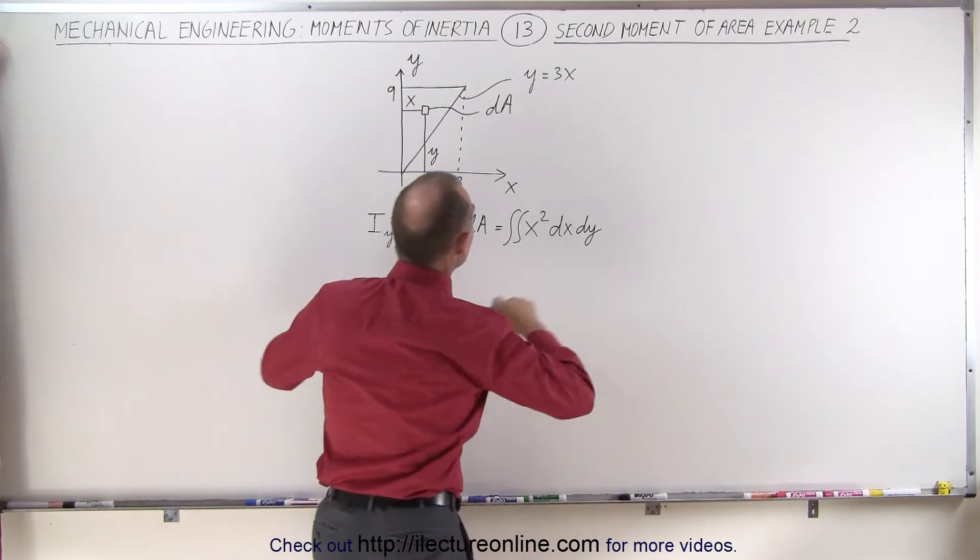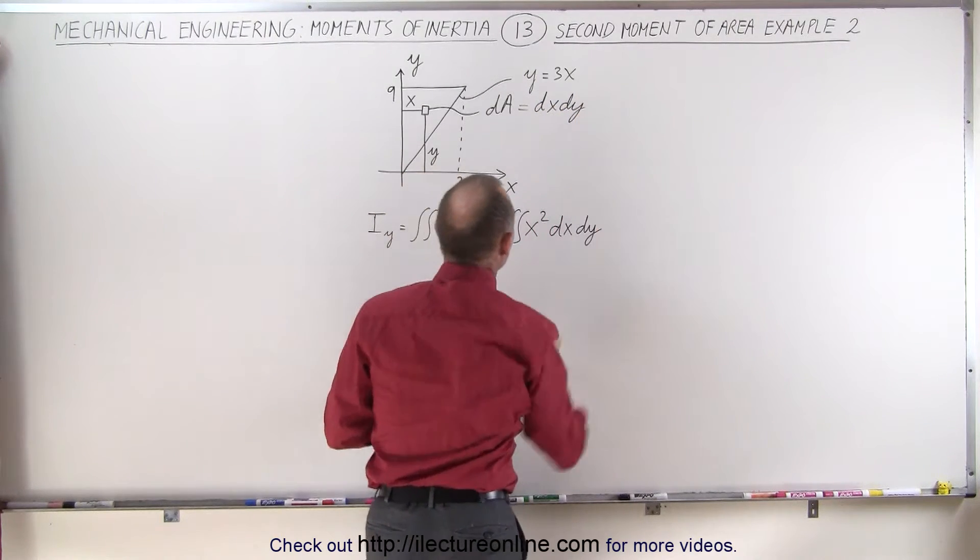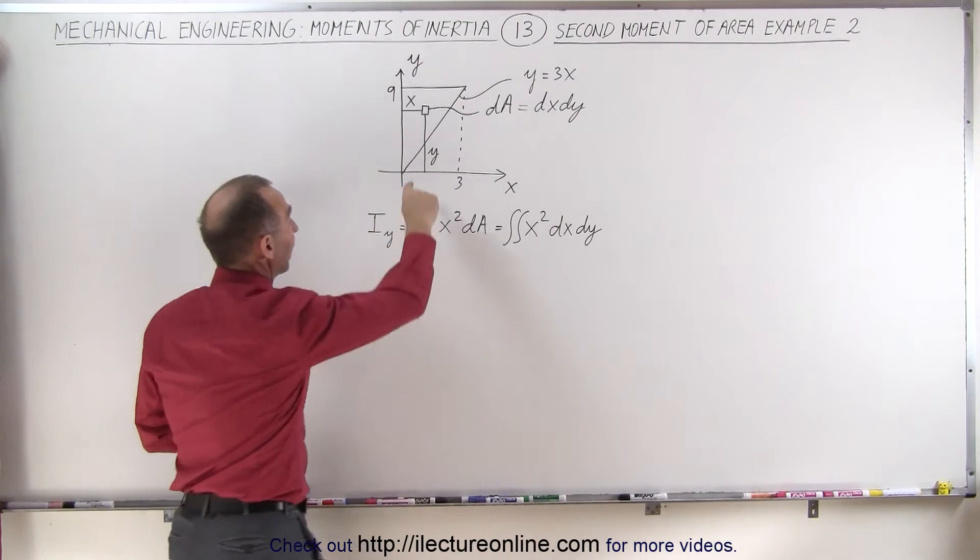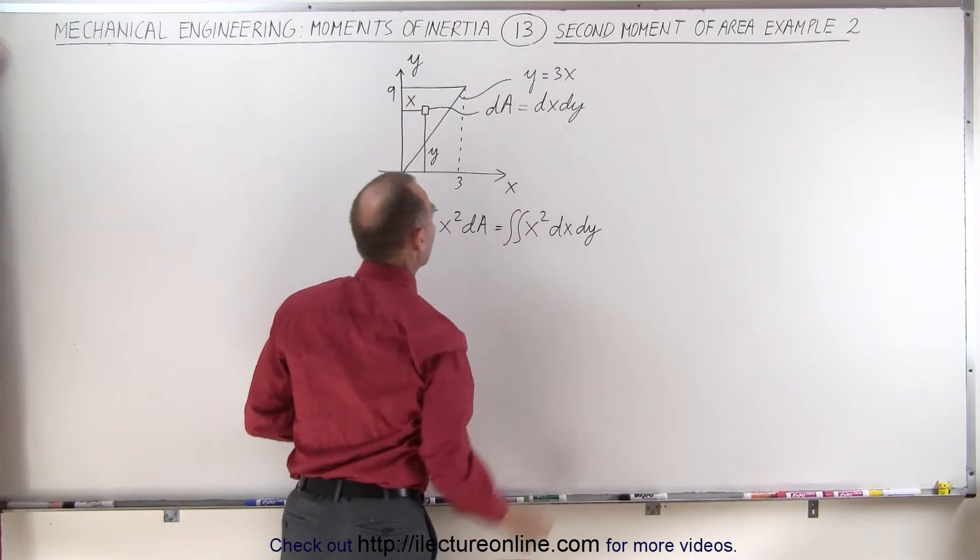Now our dA is going to be dx times dy, and the equation defined right here has a slope equal to 3, so you can say y equals 3x.